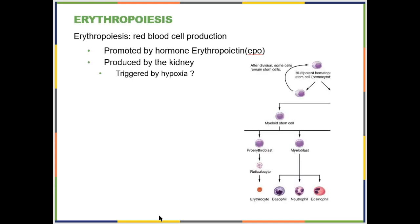Erythropoiesis specifically is red blood cell production — it is a Greek word. It is stimulated by the hormone erythropoietin, or EPO, which is produced by the kidney.